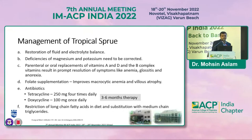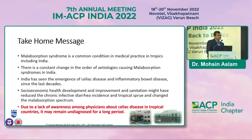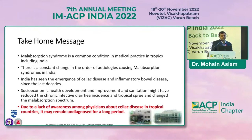To summarize, malabsorption syndrome is a common condition in medical practice in the tropics, including India. There is a constant change in the order of etiologies causing malabsorption syndromes in India. India has seen the emergence of celiac disease and Crohn's disease in the last two decades. Socioeconomic development and improved sanitation may have reduced chronic infective diarrhea and tropical sprue, changing the malabsorption spectrum. Due to lack of awareness among physicians about celiac disease in tropical countries, it may remain undiagnosed for a long period and result in complications.